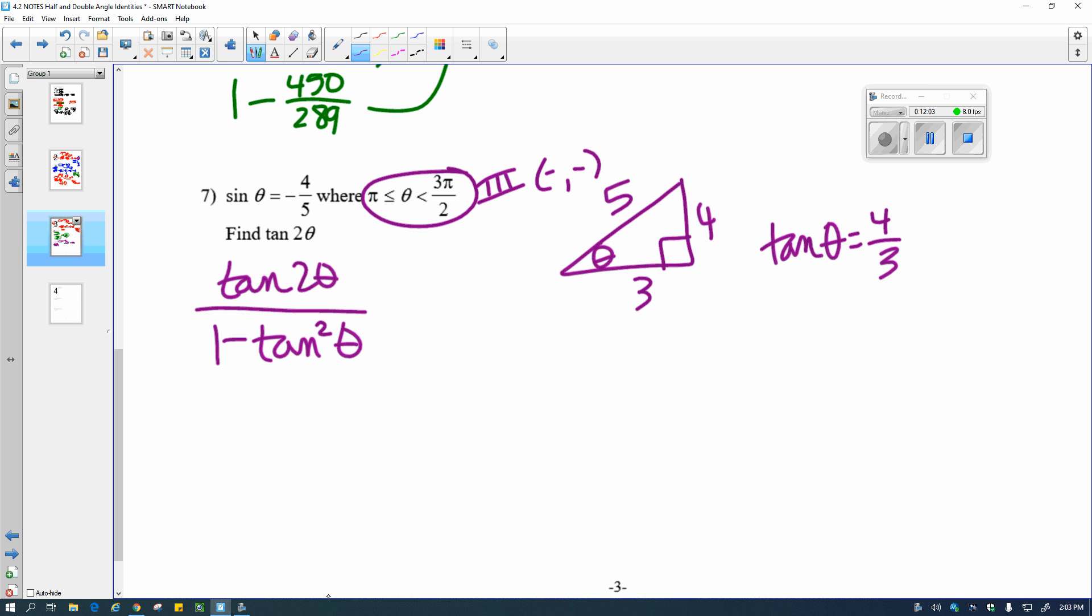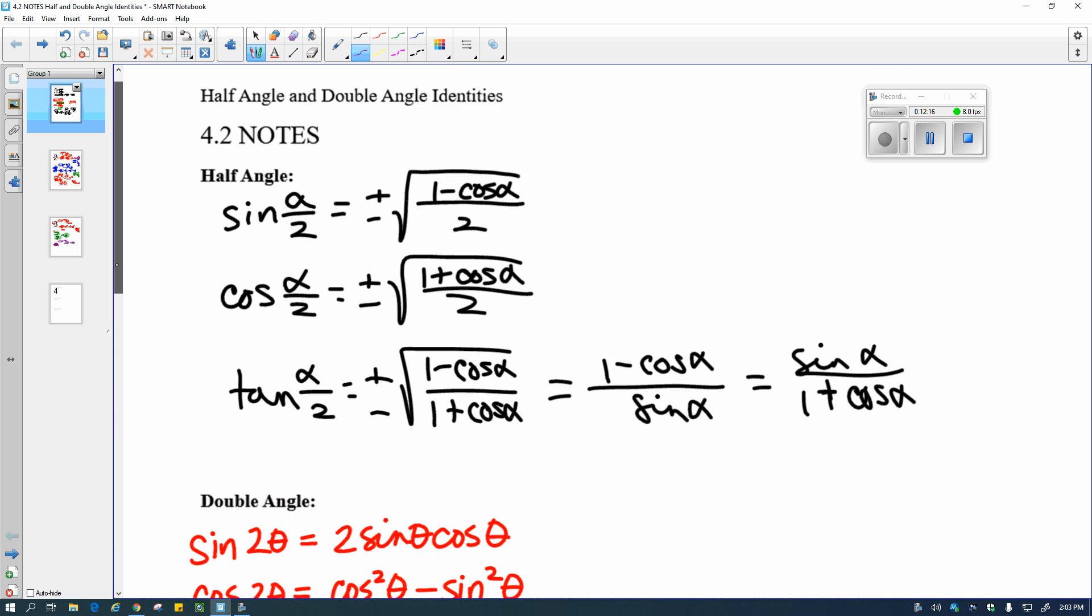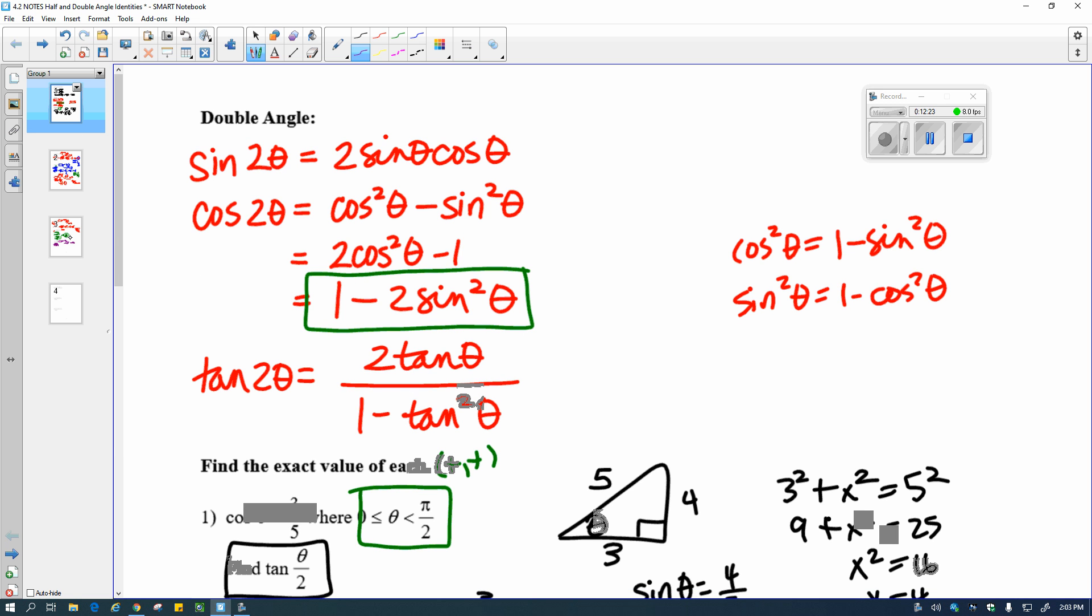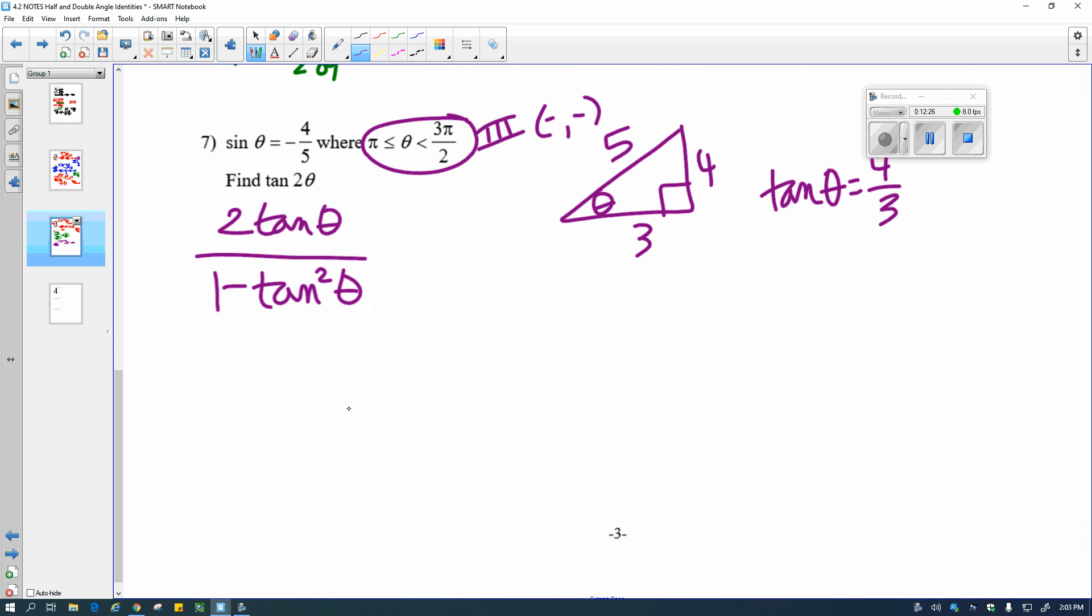So I just have to plug this in. What is my issue here? I need to back that up and rewrite that. That's 2 tangent theta. Go back and make sure I wrote it right here. Yeah, I did. I just wrote it wrong there. One of those days. So back to this problem. Here we are. When I plug that in, I get 2 times 4 thirds over 1 minus 4 thirds squared. Again, I'm going to pause the video and calculate and be back in a bit.